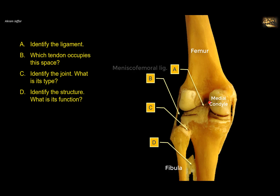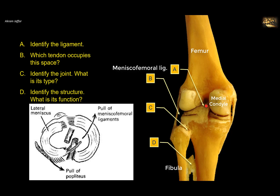It's called the meniscofemoral ligament. This is usually a ligament with two bands that clasp the posterior cruciate ligament, or sometimes it's considered as two ligaments. You can see that this is not the posterior cruciate ligament — the posterior cruciate ligament is here. It is attached to the posterior intercondylar area of the tibia and then goes up and medially toward the medial condyle of the femur. The meniscofemoral ligament is attached to the meniscus itself, not to the tibia, and it helps in moving the lateral meniscus.